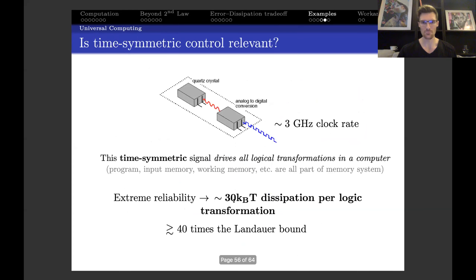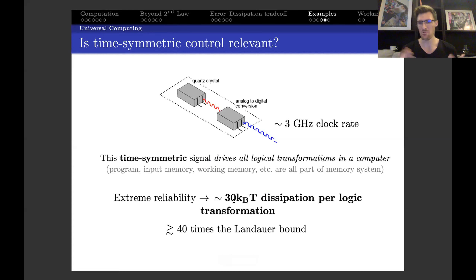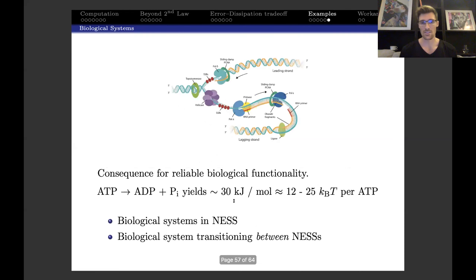Is this relevant for real computations? A back-of-the-envelope calculation shows that this result leads to about 30 kT of dissipation per logic transformation in your computer—over 40 times Landauer's bound. So if you think you care about Landauer's bound, you need to care about this error-dissipation trade-off first. Similarly, in biological systems where you don't get any momentum degrees of freedom, you'll encounter this error-dissipation trade-off. Maybe this helps explain why ATP going to ADP releases so much energy—estimated at roughly 12 to 25 kT.